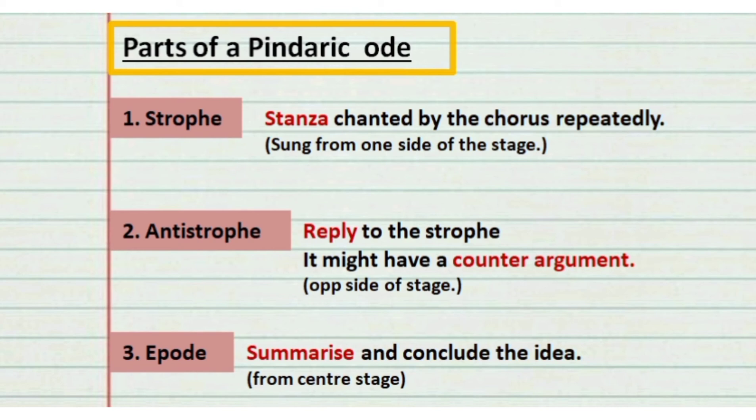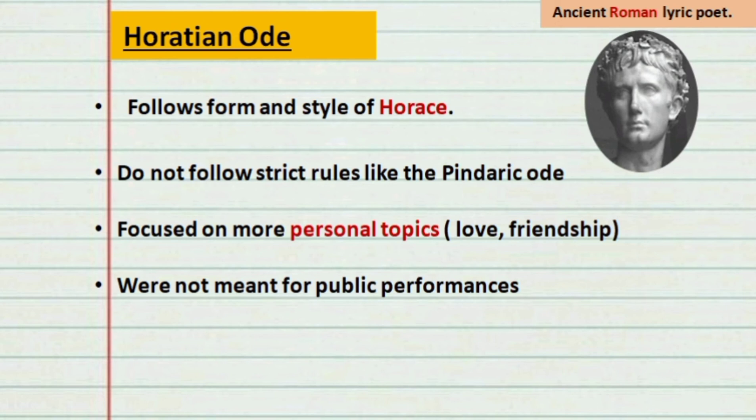The next type of ode is the Horatian Ode, which follows the form and style of the Roman lyric poet Horace. Unlike the Pindaric Ode, Horatian Odes do not follow strict rules, and they were not meant for public performances. Instead, they focused more on personal topics like love and friendship.